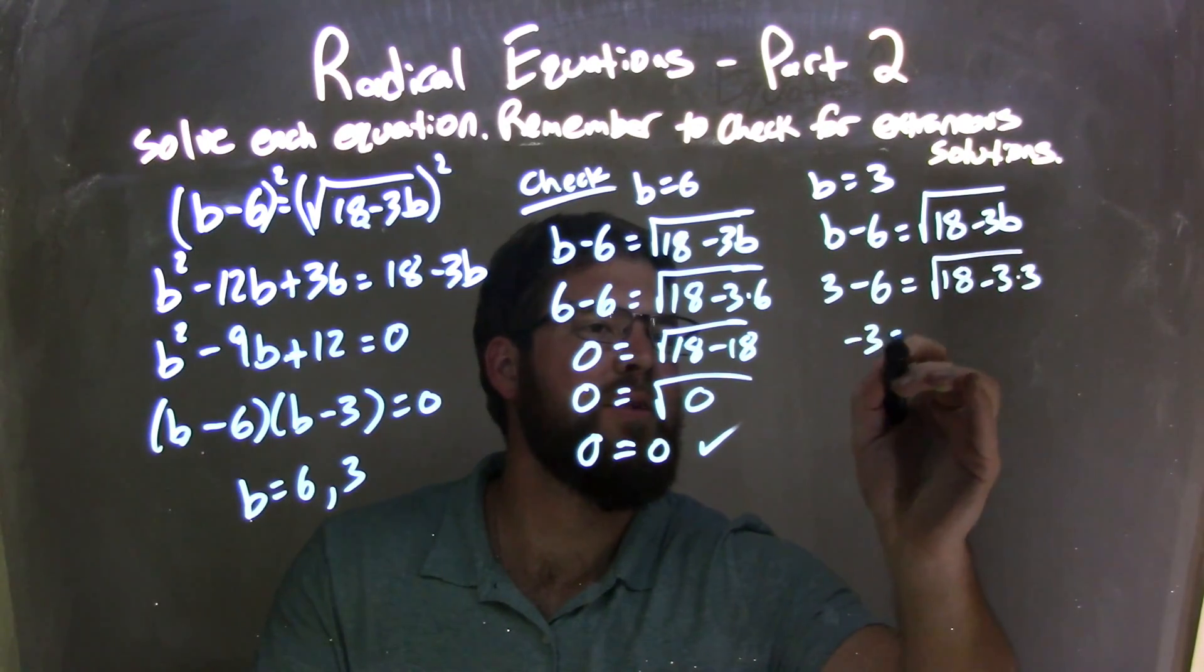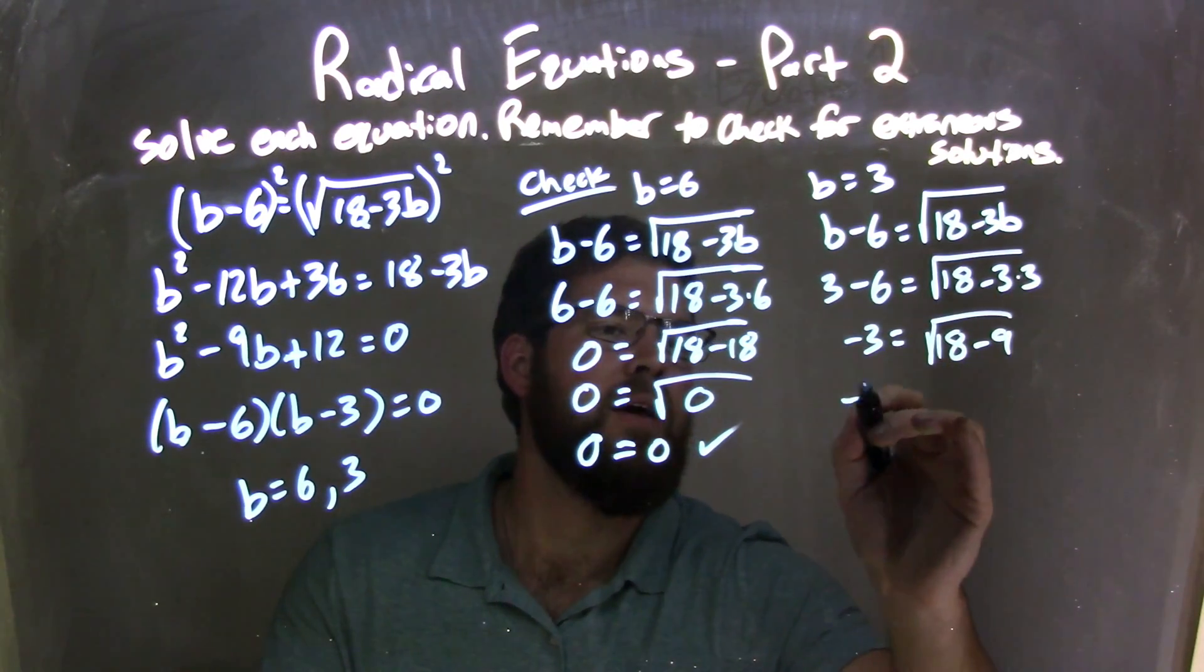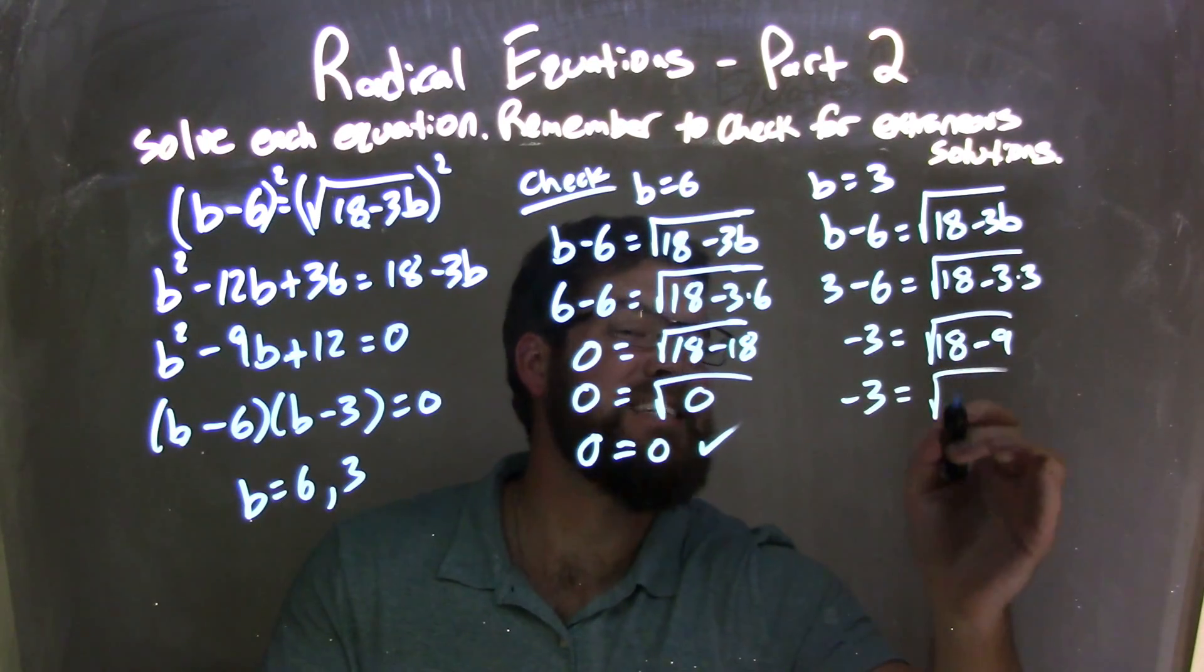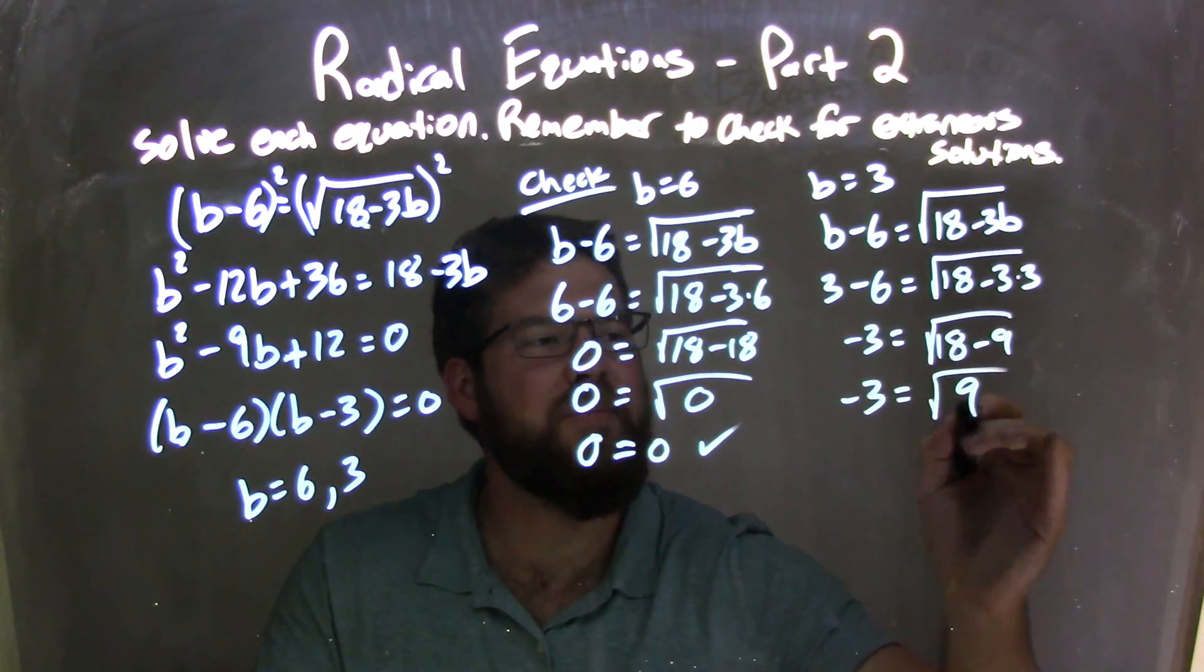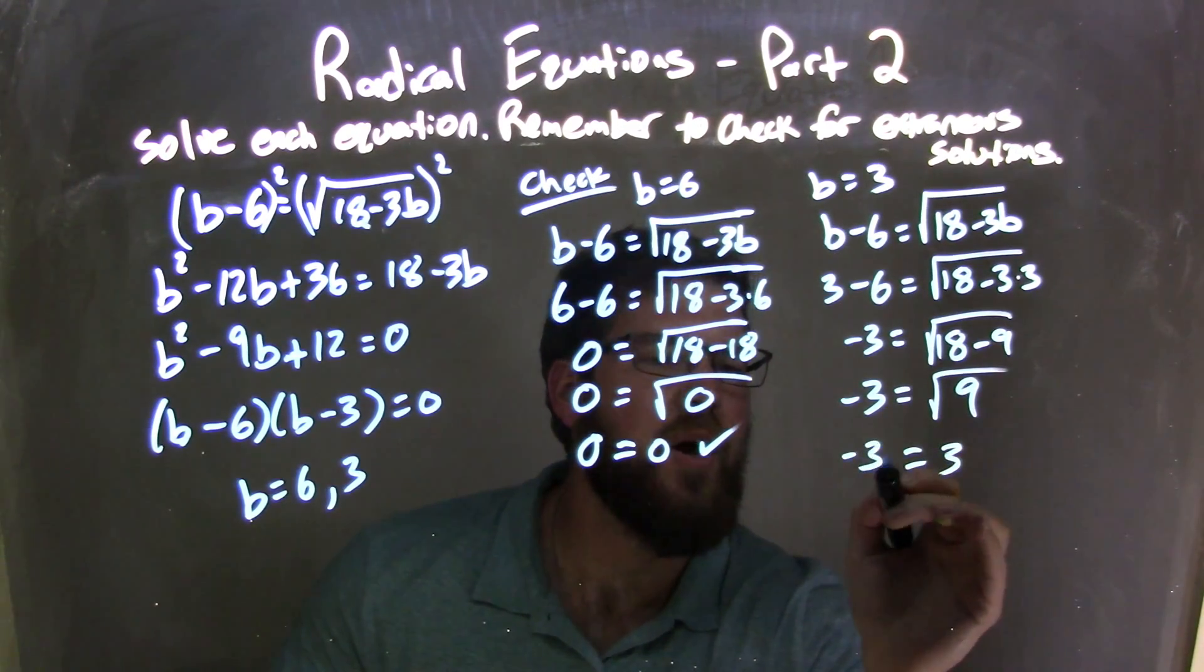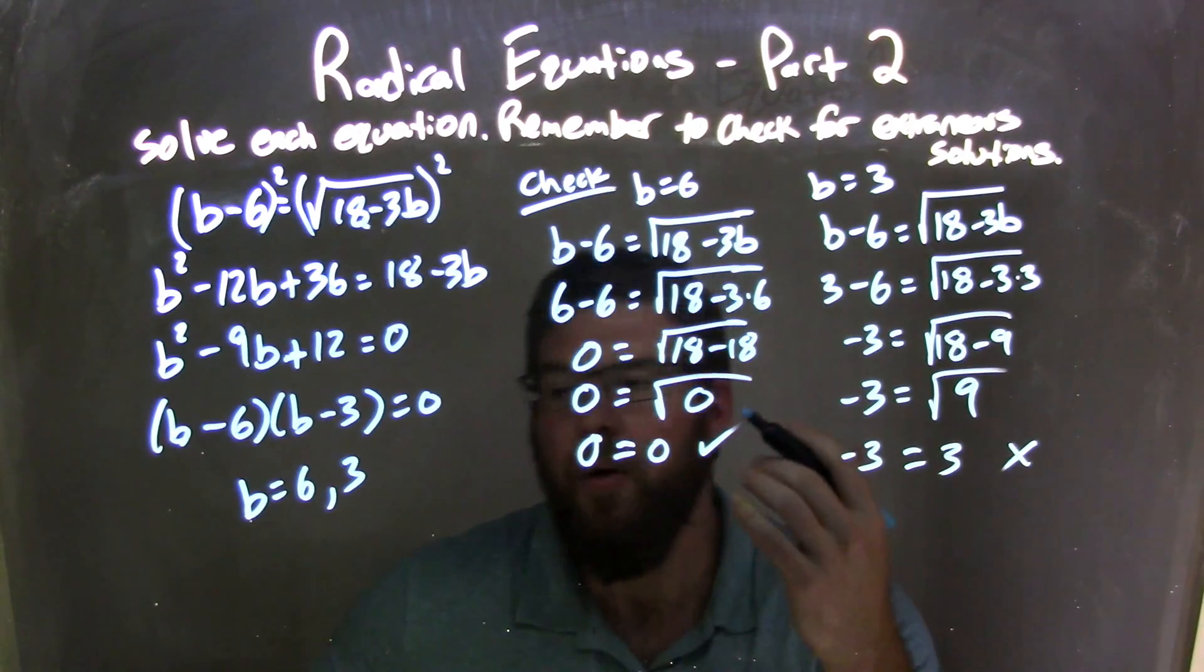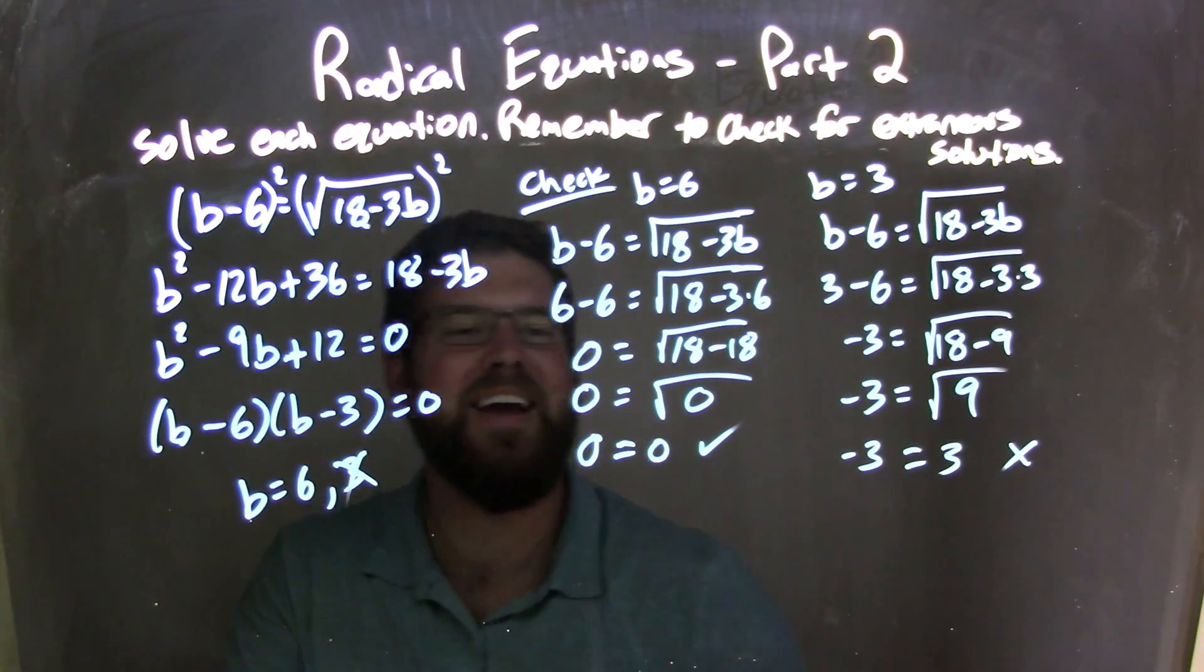So I have 3 minus 6 equals 18 minus 3 times 3. Well, 3 minus 6 is negative 3. 18, order of operations here, 3 times 3 is 9, so 18 minus 9. Negative 3 equals the square root of 18 minus 9 is just positive 9, right? Square root of positive 9 is positive 3, but does negative 3 equal positive 3? I don't think so. Hopefully you shouldn't either, so 3 is an extraneous solution.